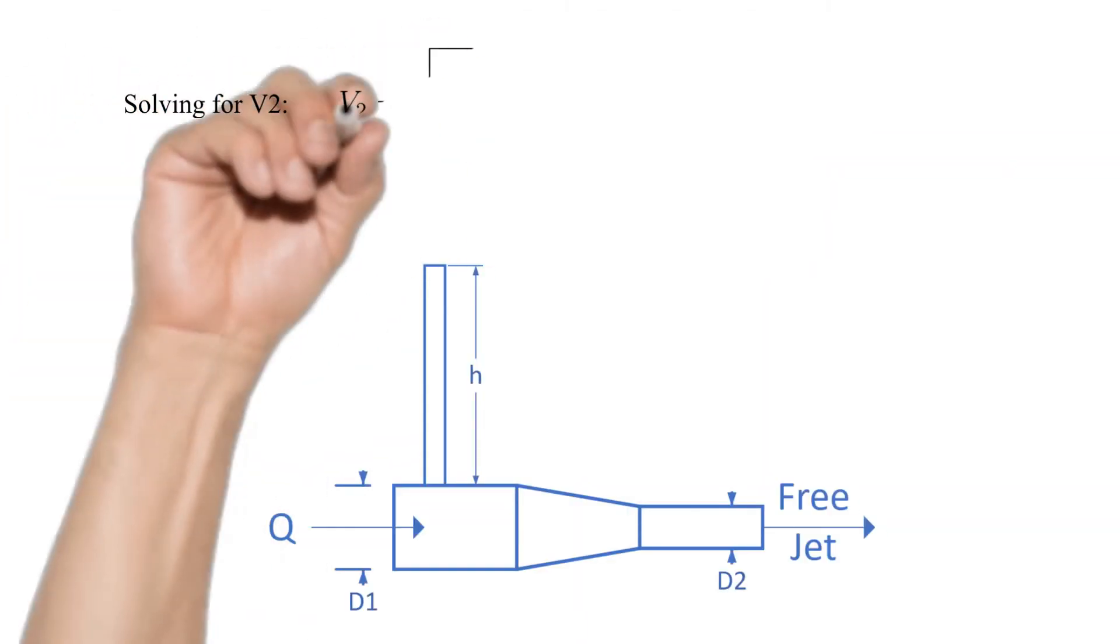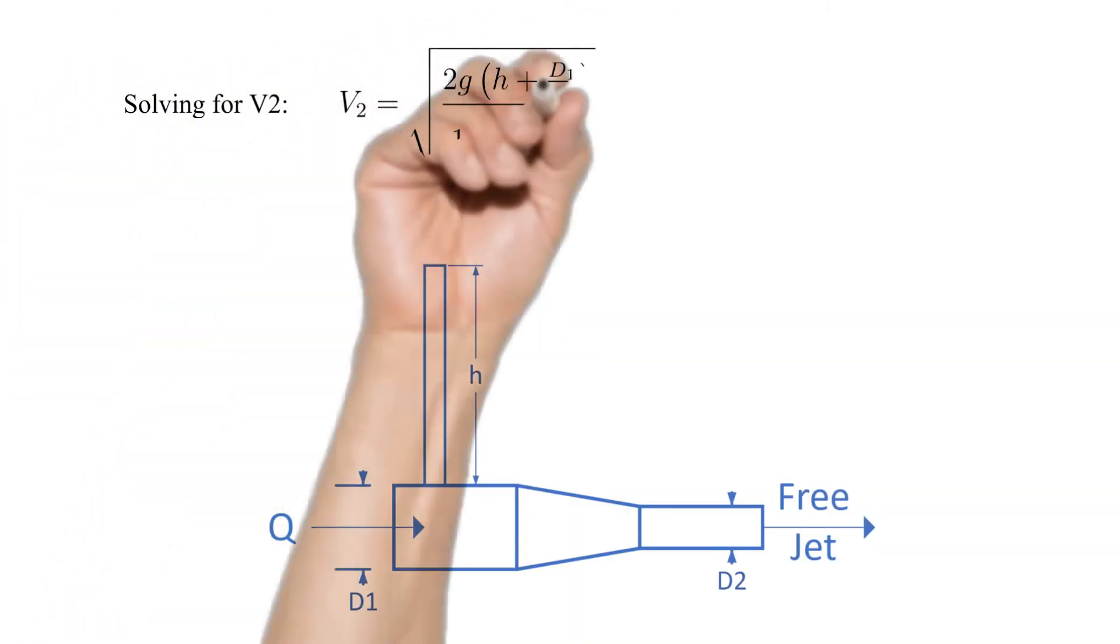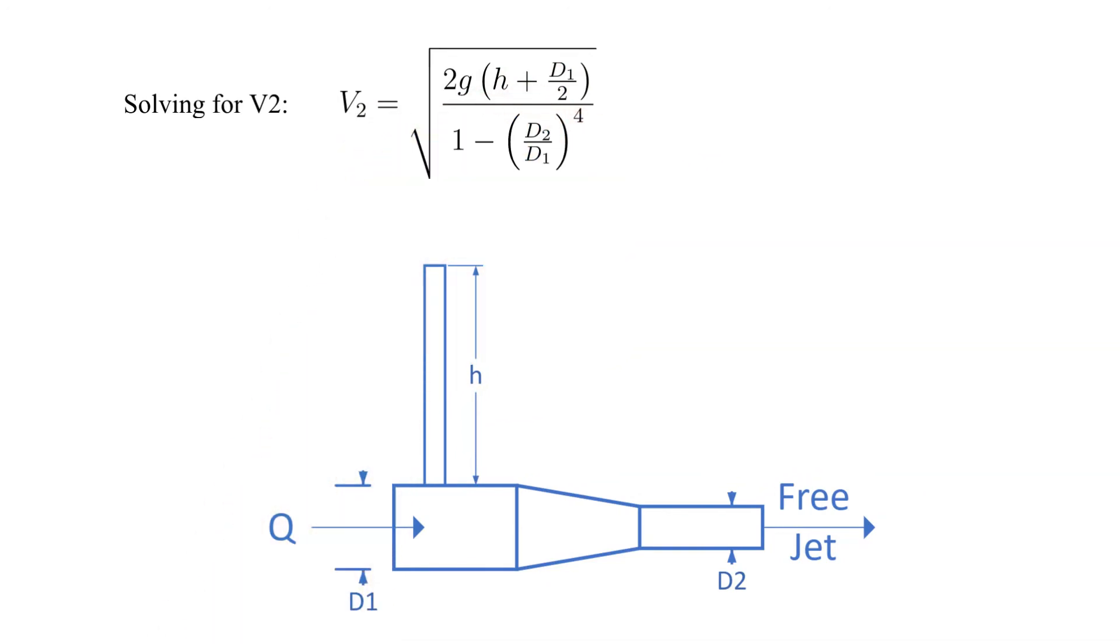Now we do some algebra and solve for V2. The result is shown here. Now is a good time to check units. V2 will have units of the square root of feet per second squared times feet, which is feet per second. This is valid.